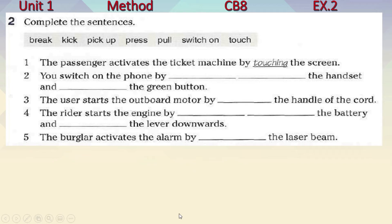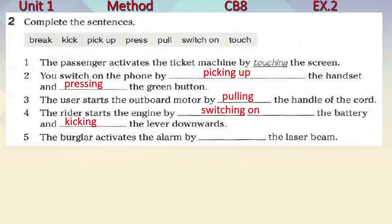Let's take our answers. Number two: you switch on the phone by picking up the handset and pressing the green button. Number three: the user starts the outboard motor by pulling the handle of the cord. Number four: the rider starts the engine by switching on the battery and kicking the lever downwards. And the final one: the burglar activates the alarm by breaking the laser beam. What do you notice about the verbs? Touching, picking up, pressing, pulling, switching on, kicking, and breaking — ing is added to each one of them.